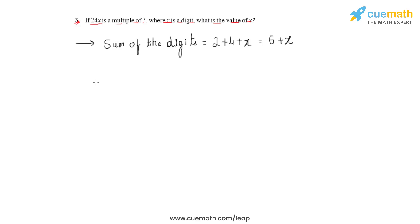If we put in x = 0, the sum would be 6 + 0, which gives us 6, and this number is divisible by three. When assigning the next value for x, we'll have to make sure that the sum results in a number which is divisible by three.